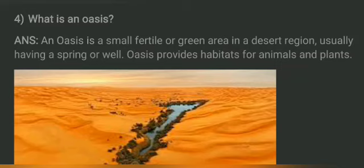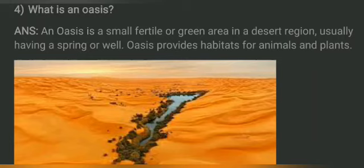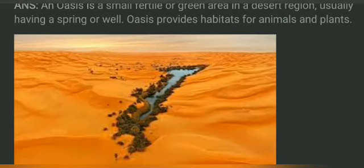An oasis is a small fertile or green area in a desert region, usually having a spring or well. An oasis provides habitats for animals and plants. It is a small area where we find water, greenery, and trees. Around the oasis the land is barren, but in the middle you can find a place full of green leaves and trees with water.